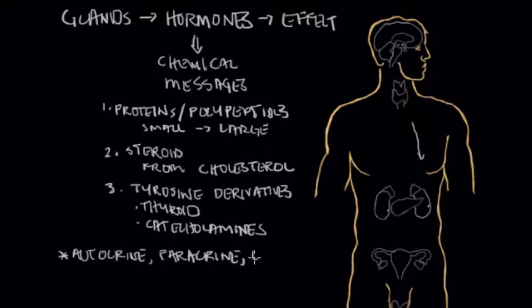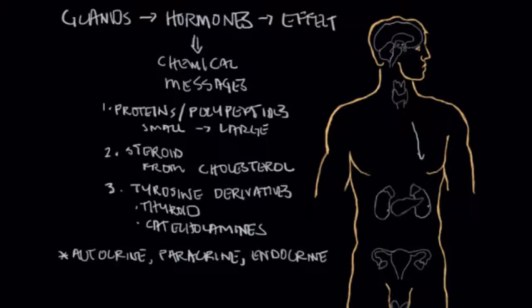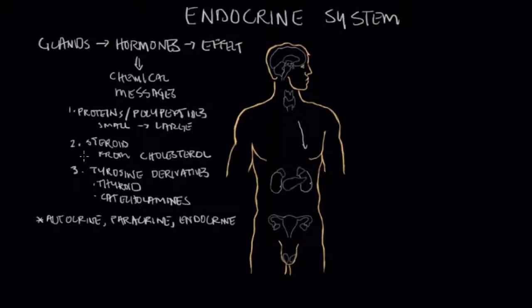There's no hard line drawn with where paracrine signal function ends, but generally these are regionally acting signals. Then the last class are the endocrine signals — the classic hormones said to function at a distance in the body, with a response elicited somewhere far away, such as from the pituitary gland traveling all the way down to the gonads. Now that we've covered how hormones are classified, let's talk about the main organs of the endocrine system.